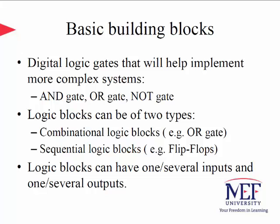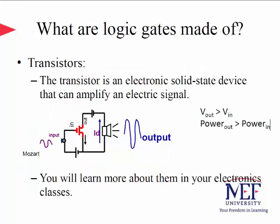Logic blocks can have one or more inputs and one or more outputs. So what are the logic gates made of? They are made of transistors. The transistor is an electronic solid-state device that can amplify an electric signal. Think of wanting to listen to Mozart — the input waveform is too small, but the transistor helps you amplify it so that you can hear. Amplification could be based on voltage, power, or current. Usually, the output voltage is greater than the input voltage after amplification, or power output is greater than power input after amplification.